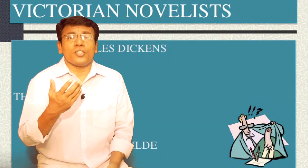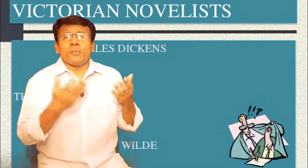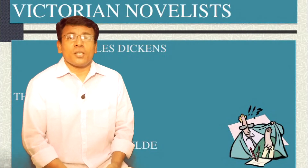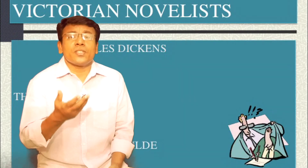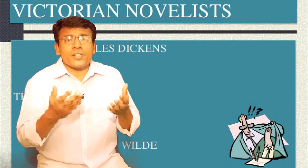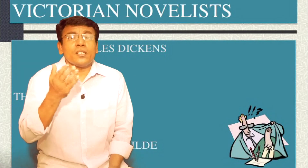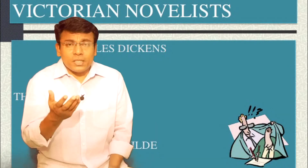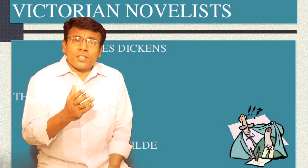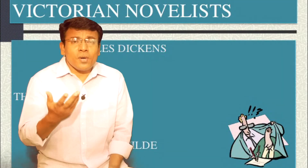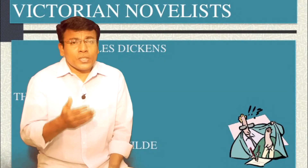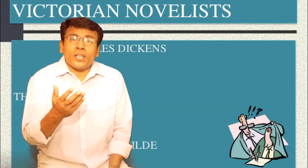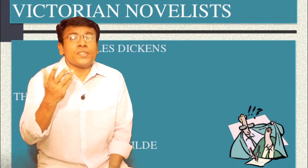We discussed how India became a colony of the British Empire. There are many more things we can say about the socio-political situation of the Victorian era, but our syllabus requires only the above-mentioned topics. From this lecture onwards, we are going to discuss the literary history of the Victorian period. From the examination point of view, looking at previous years' question papers, the literary history is more important than the socio-political history.